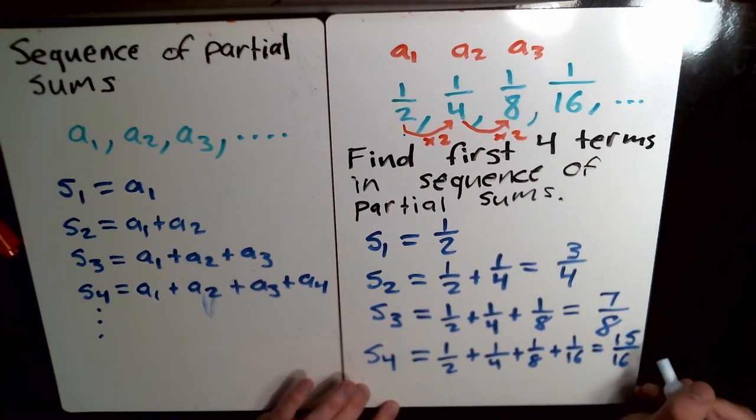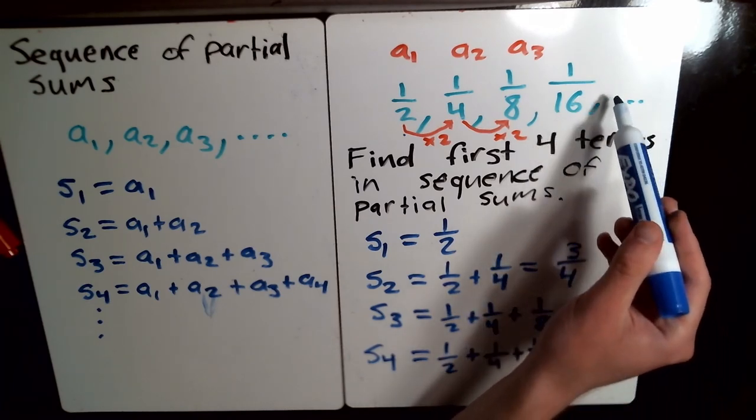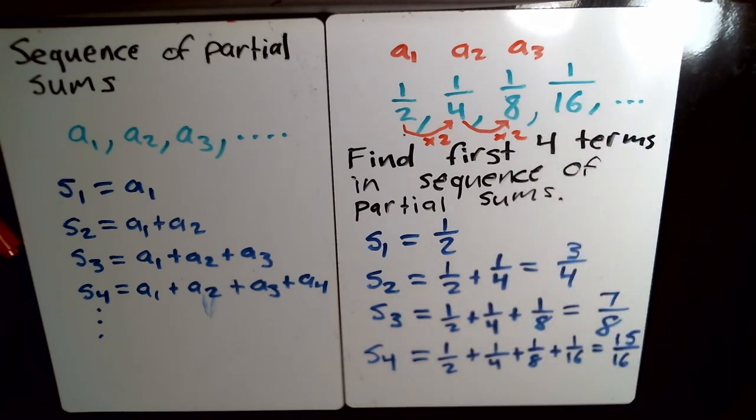And I'm not going to do this all out because it's a little messy just fraction-wise. It turns out to be fifteen sixteenths. For the fifth term in the sequence of partial sums, you do the same thing. You just take this and add one over thirty-two would be the next term in this. So, you would add one over thirty-two to get your next term in the sequence of partial sums.